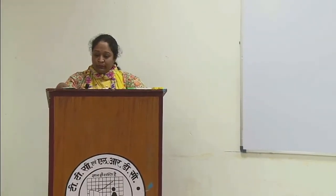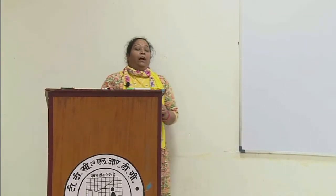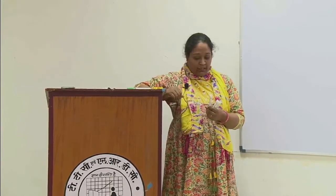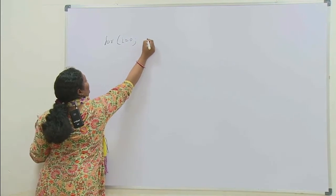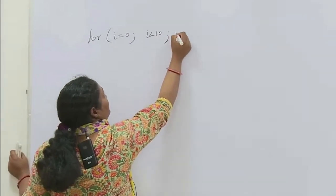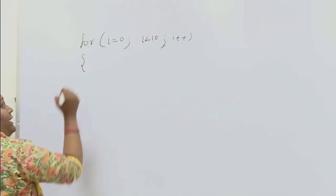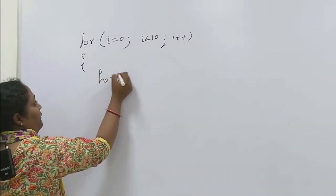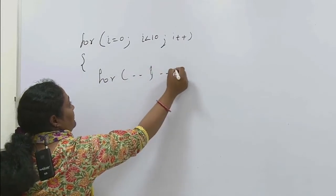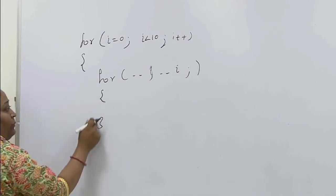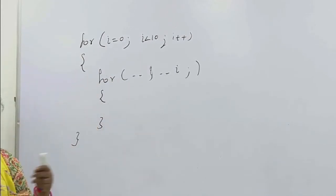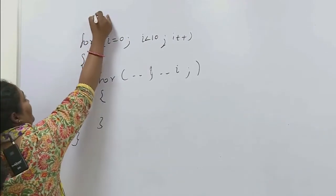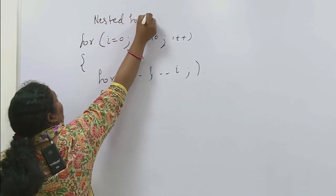Namaskar. Aaj hum apne lecture mein nested for loops ke bare mein padhenge. Apne nested if bhi dekha tha. Usi prakar nested for loop hota hai. Nested for loop ka matlab kya hai? Jaise apne for loop likha koi, uske andar for loop, us for loop ke andar ek aur for loop. Ye may not do se for loop, ya phir may not teen for loop. Dusre loop ko andar lena, this is called nested for loop.